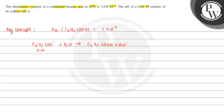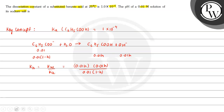At equilibrium, the concentration of C6H5COOH and OH⁻ are both 0.01H, and the concentration of C6H5COO⁻ is 0.01(1 − H). The hydrolysis constant KH equals Kw divided by Ka, which equals the concentration of C6H5COOH multiplied by concentration of OH⁻, which is 0.01H squared, divided by the concentration of C6H5COO⁻, which is 0.01(1 − H).